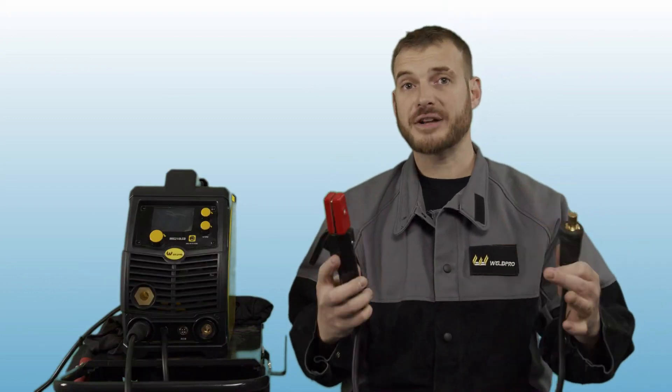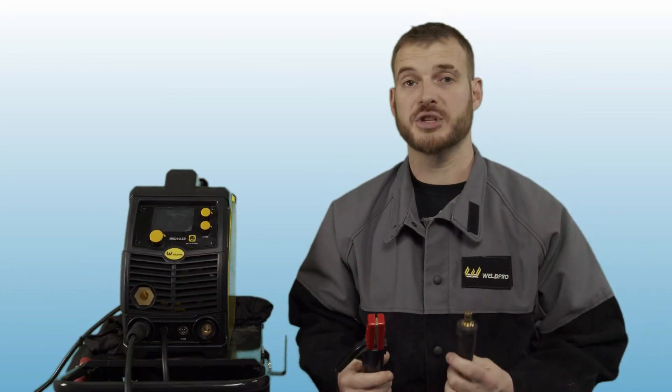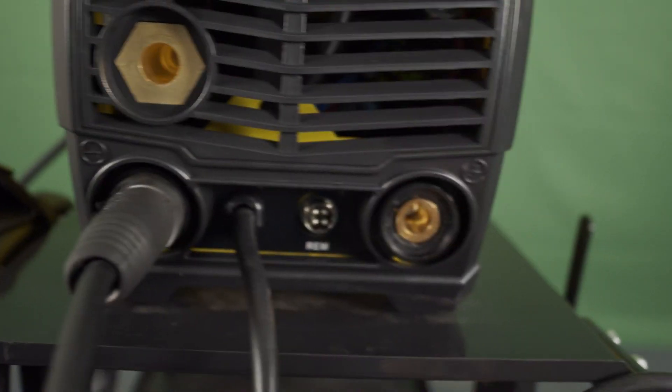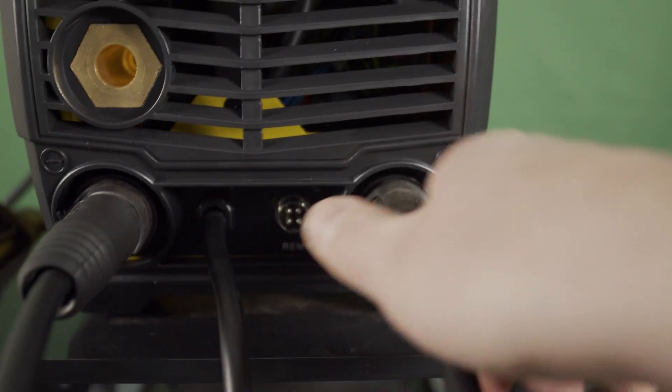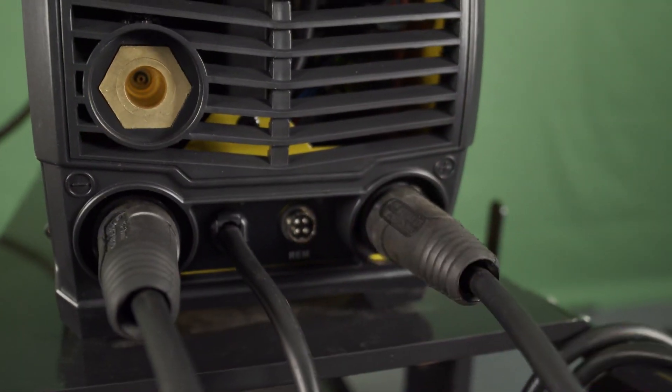Next let's install our electrode holder or stinger to the front of the machine. Again because we're running DC electrode positive we're going to connect the dense connector from our stinger to the positive terminal on the front of the MIG 210 LCD. Lining up the notch slide the dense connector in and rotate clockwise 90 degrees. This will ensure the connector is tight.